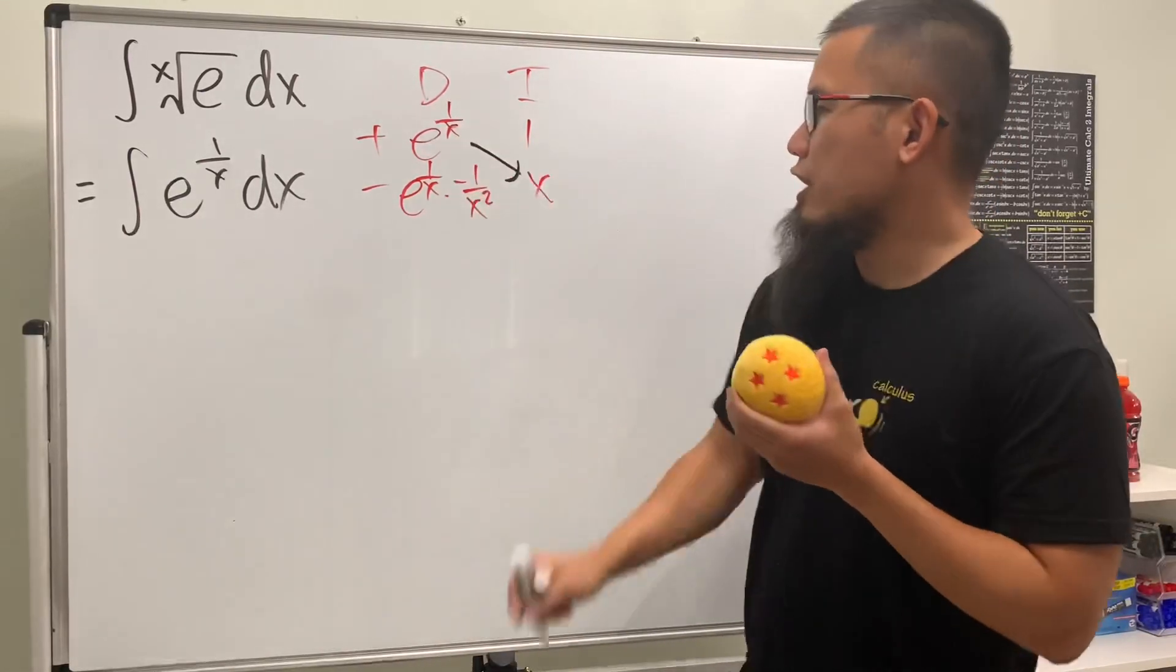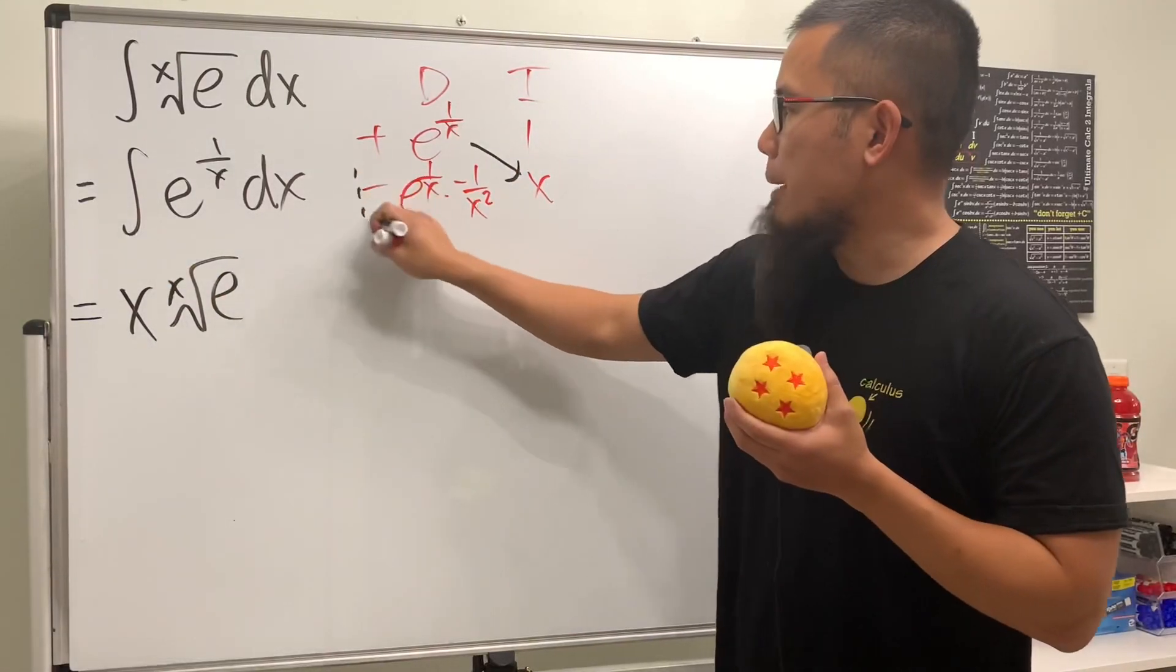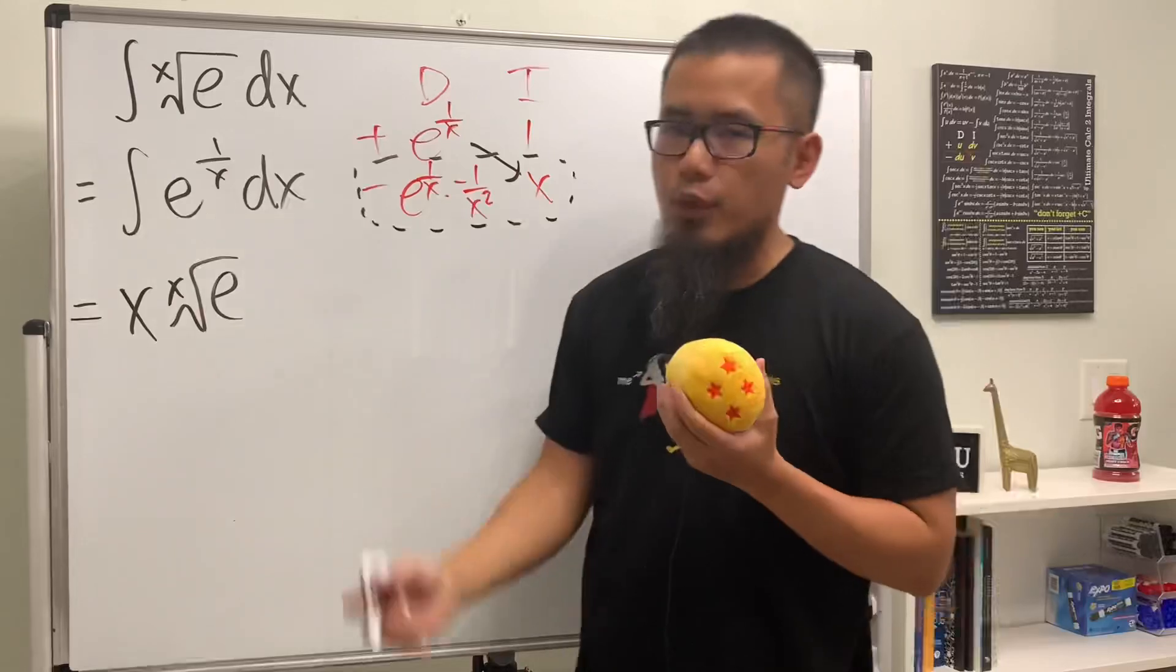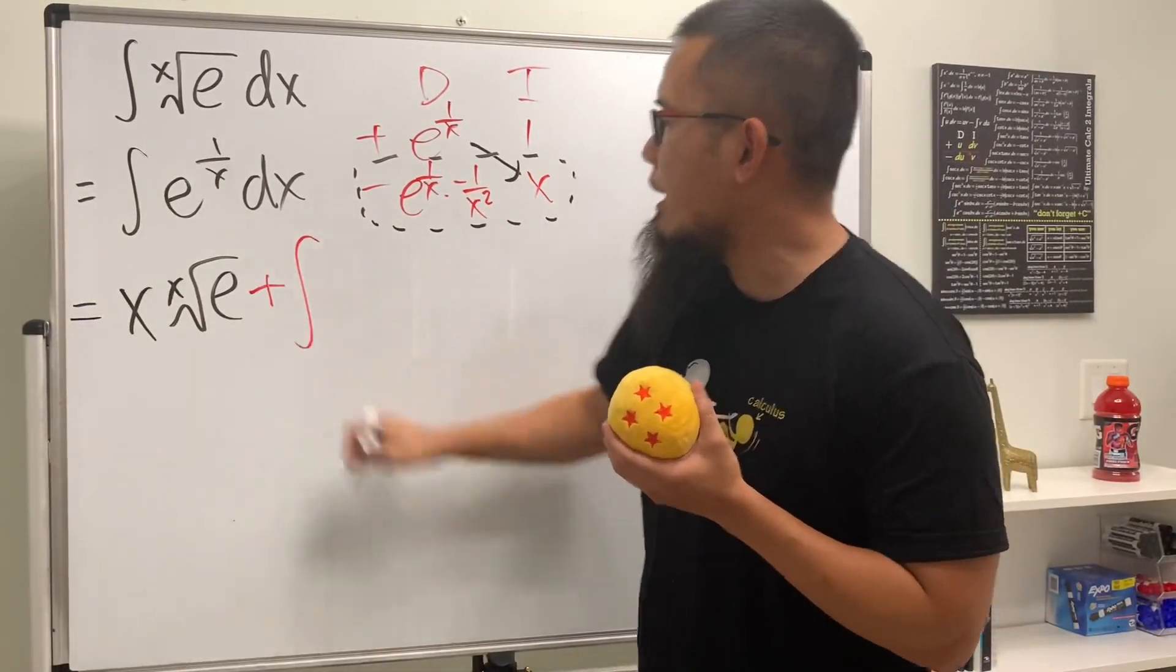And as we can see, this times this is going to give us the first power of answer. So we get x times dx root of e, like so. And don't forget, we still have to multiply by this row, and this is going to be another integration, right? Negative times the negative, don't forget, it's a plus.